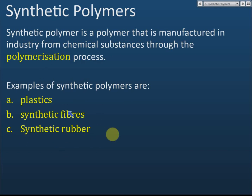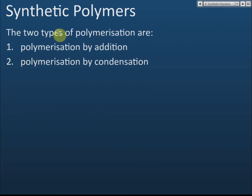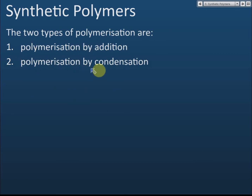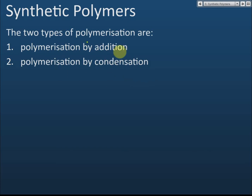There are two types of polymerization. The first one is called polymerization by addition, and the second one is called polymerization by condensation. Before we discuss these two, we first need to understand what addition and condensation mean.